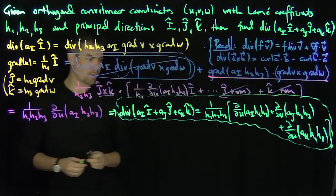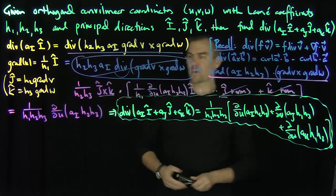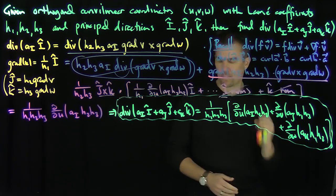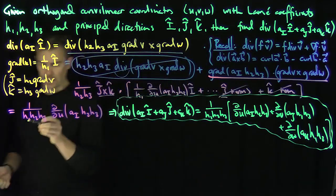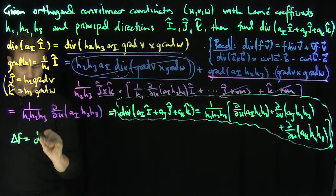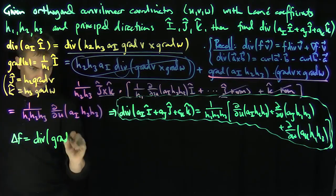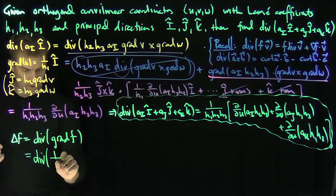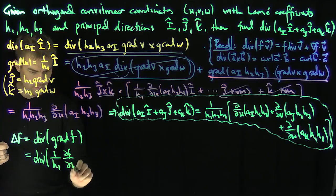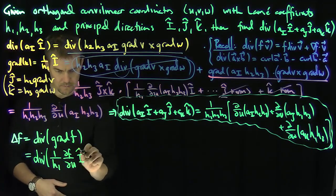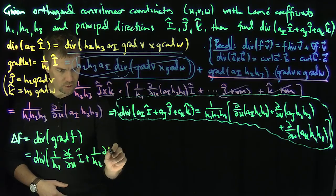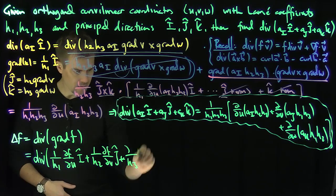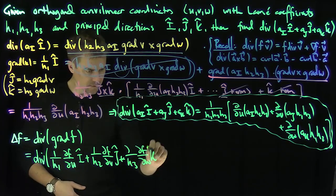Now we get the Laplacian for free. The Laplacian is the divergence of the gradient, and the gradient of f is (1/h1)(∂f/∂u) î + (1/h2)(∂f/∂v) ĵ + (1/h3)(∂f/∂w) k̂.